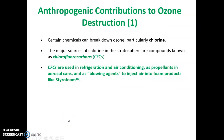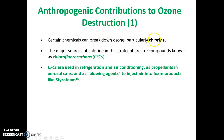Now we're going to look at the anthropogenic contributions to ozone destruction. The word 'anthropo' is similar to 'anthropology,' meaning human, and 'genic' refers to generate or cause — so anthropogenic means human-generated or human-caused contributions to ozone destruction. This is a must-know term.